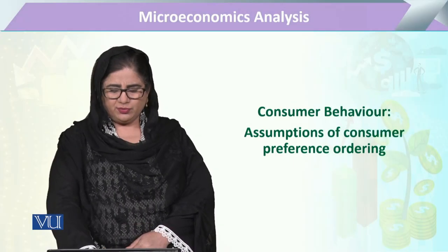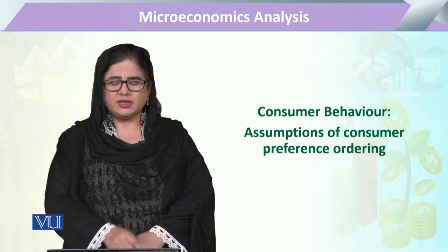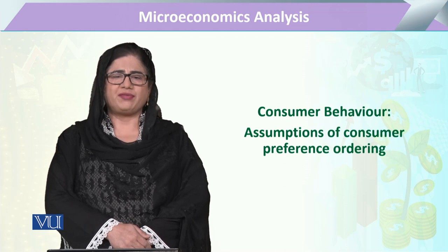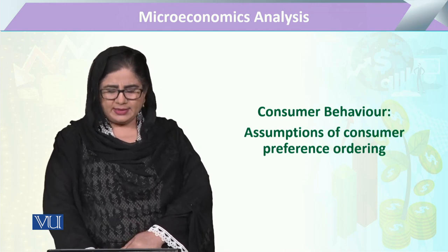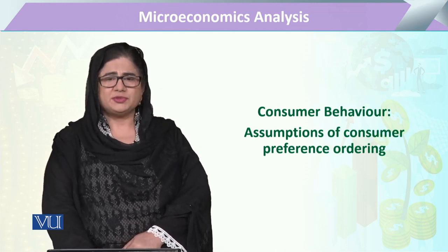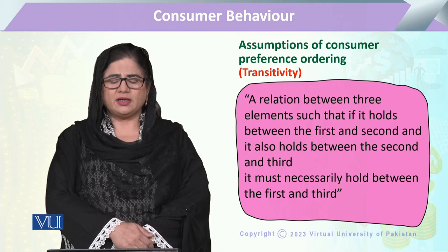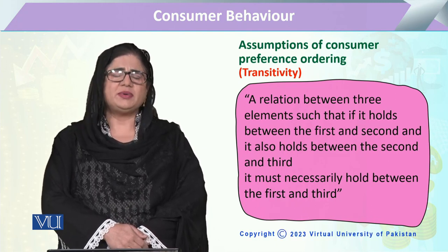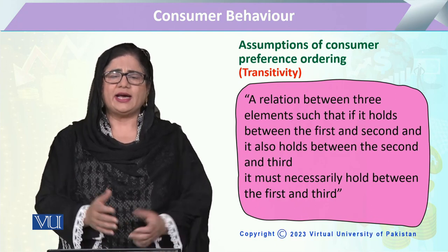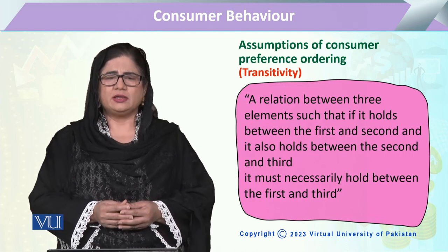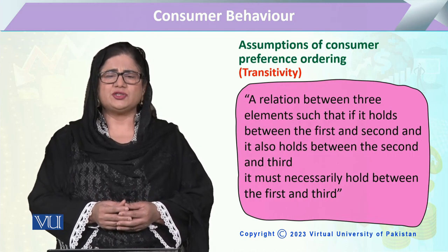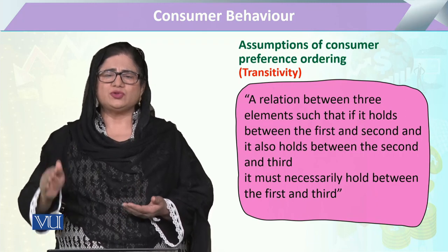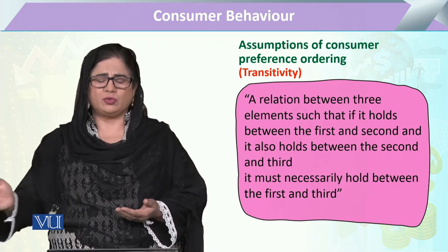In this module, we are going to study the assumptions of consumer preference ordering, and the second assumption we are going to study is transitivity. Transitivity is basically derived from 'transition,' which refers to converting or moving from one thing to another.